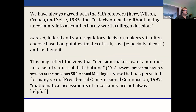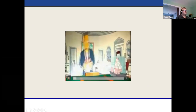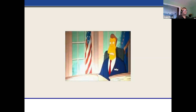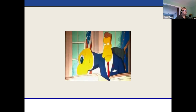Now to get into the meat of this paper with George Gray — way back at the beginning, Dick Wilson, Edmund Crouch, and Lawrence Lave said: 'A decision made without taking uncertainty into account is barely worth calling a decision.' And yet there's still rampant examples of decisions being made based on point estimates. It continues not only to happen but to be encouraged as the right way to do things — that uncertainty assessment is 'not helpful,' 'confusing,' 'too difficult,' or 'wrong.'